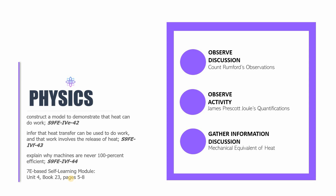Tatlo-tatlo sila. So for the first one, you should be capable of constructing a model to demonstrate that heat can do work. And then the second one, you should be capable of inferring that heat transfer can be used to do work, and that work involves the release of heat. And then the last learning competency is that you should be capable of explaining why machines are never 100% efficient.